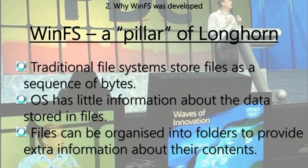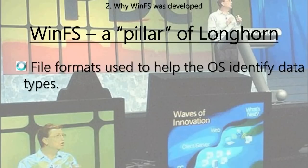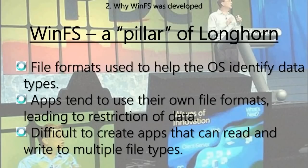One way Windows has gotten around this problem is by using file formats or file types, which can help Windows identify what kind of data is in a file. For example, Windows will know by the JPEG file extension that it's a picture file. However, that doesn't give Windows information about what's actually in the picture. As a consequence, applications tend to use their own file formats, which means data can't easily be shared between different programs, making it difficult especially for new developers to write programs that can read and write multiple file types.